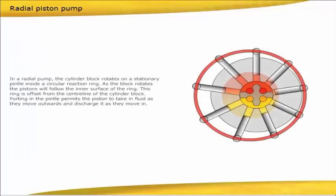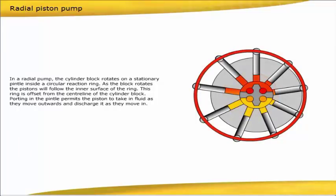In a radial pump, the cylinder block rotates on a stationary pintle inside a circular reaction ring. As the block rotates, the pistons will follow the inner surface of the ring. This ring is offset from the centerline of the cylinder block. Porting in the pintle permits the piston to take in fluid as they move outwards and discharge it as they move in.